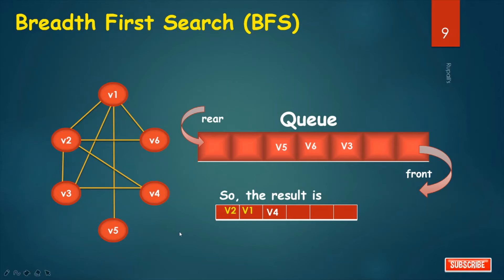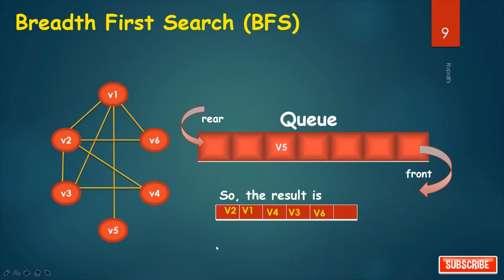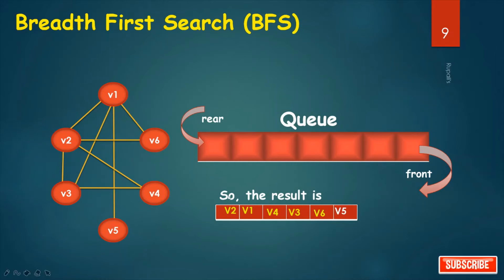Remove V3 and check the connected nodes: V2, V1, and V4 — all have status 3. Then remove V6 and check the connected nodes: V1 and V2 — all have status 3. Then remove V5 and check the connected nodes: only V1, which is in status 3. This is the result for BFS traversal.